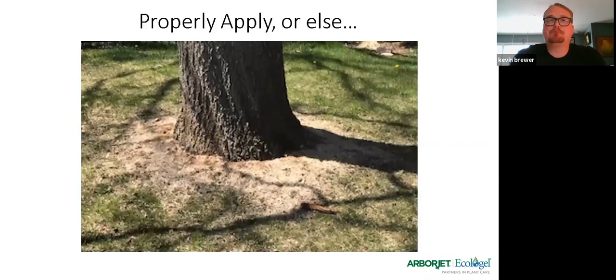You do have to apply properly — if you pour a plant growth regulator meant for a tree on grass, it's going to kill the grass. Dig the moat, pour it around the base of the tree, but don't just pour it on the grass around the tree.